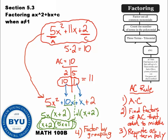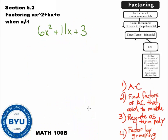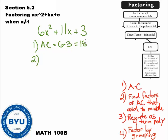Let me do another example to make sure everybody understands. First, check for any common factors — none here. We count the terms: 3 terms, and the first value is not equal to 1. So we apply the AC rule. Step 1: take A times C, which in this case is 6 times 3. 6 times 3 is 18.